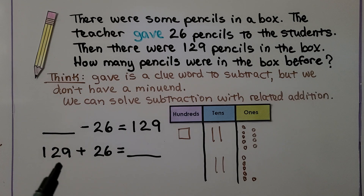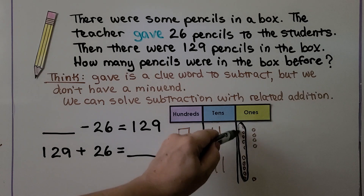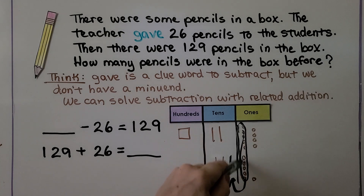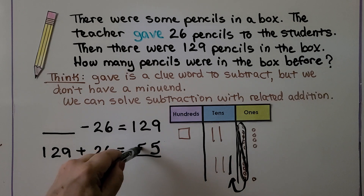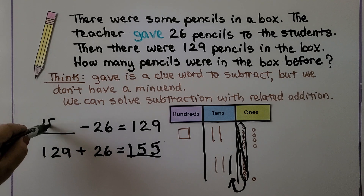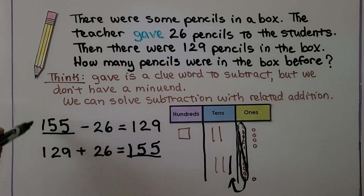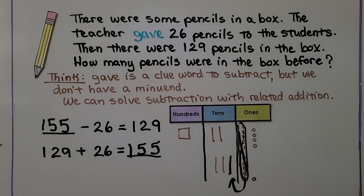We solve it as an addition problem. We have 129: 1 hundred, 2 tens, 9 ones. We have 26: 2 tens, 6 ones. We add them together. 9 ones and 6 ones make 15 ones — we move 10 ones over as a new ten and keep 5 ones. We count 5 tens and 1 hundred. The sum is 155. That means 155 is the minuend — there were 155 pencils in the box. 26 were given away, leaving 129 in the box. The answer is 155 pencils were in the box before.